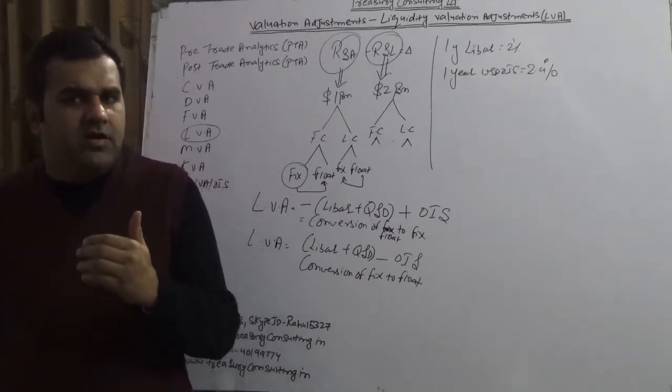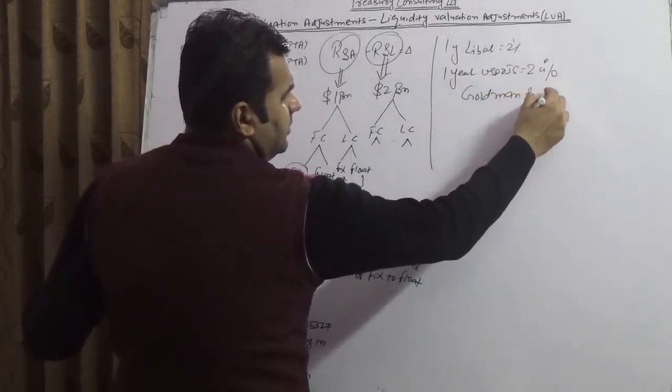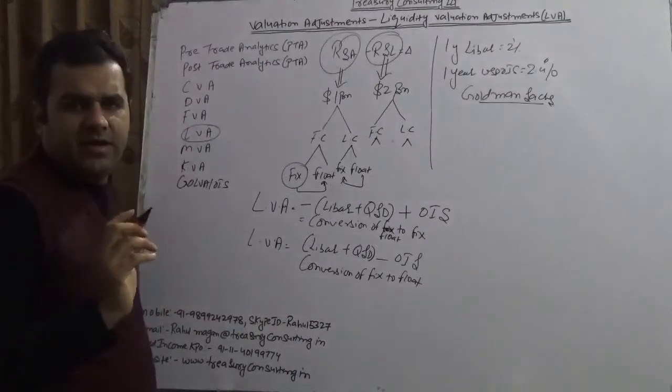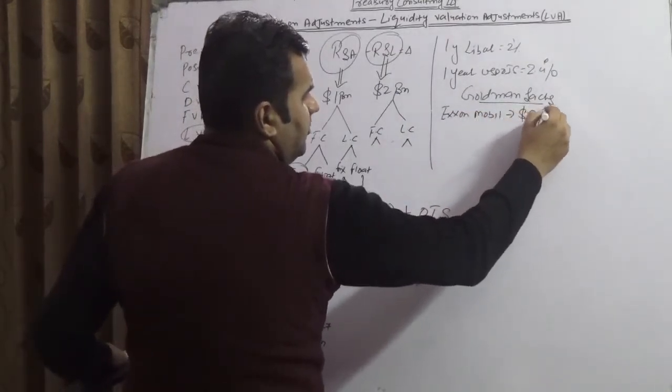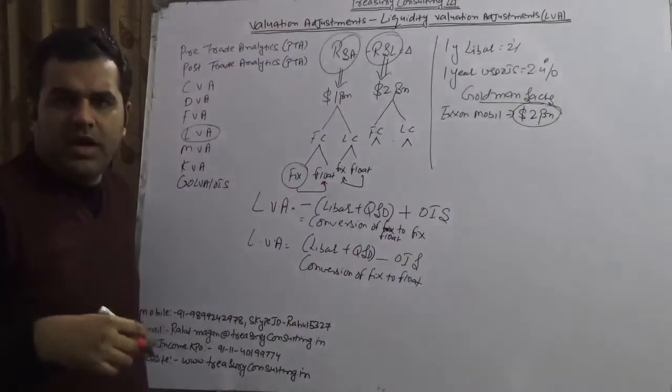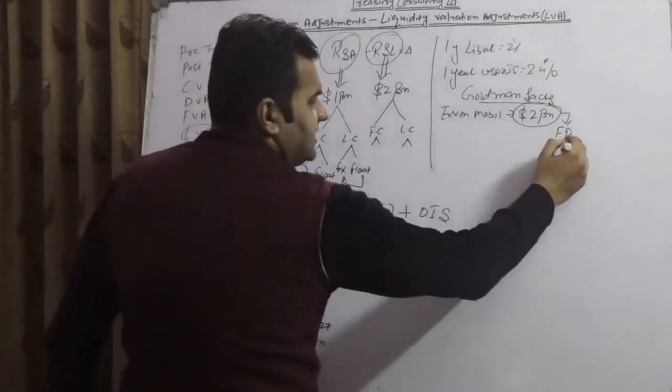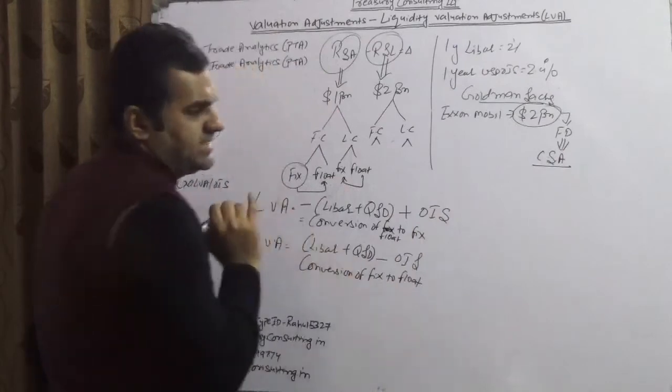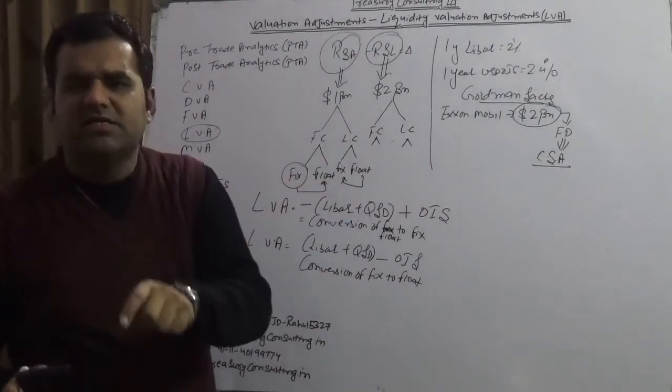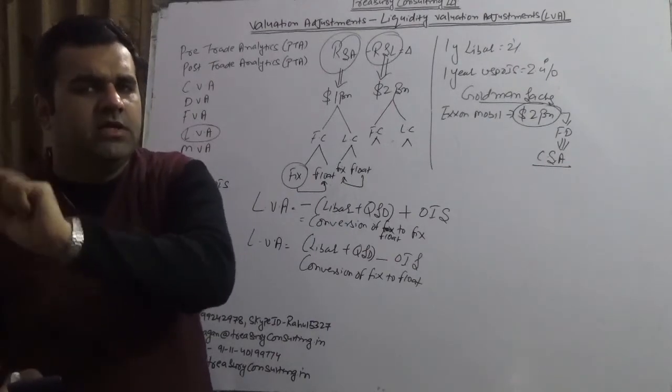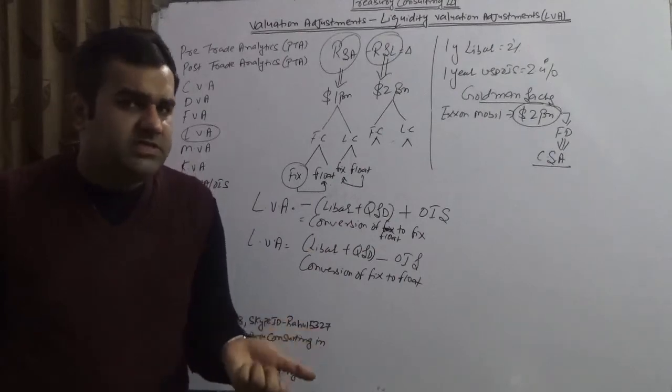You might be thinking, why is this a valuation adjustment? Let me give you an example. Let's take Goldman Sachs and ExxonMobil. Assuming ExxonMobil deposited $2 billion with Goldman Sachs, this $2 billion is an FD backed up by CSA (Credit Support Annex). On a very simplistic note, assume they have a single currency, single collateral CSA - very simple.